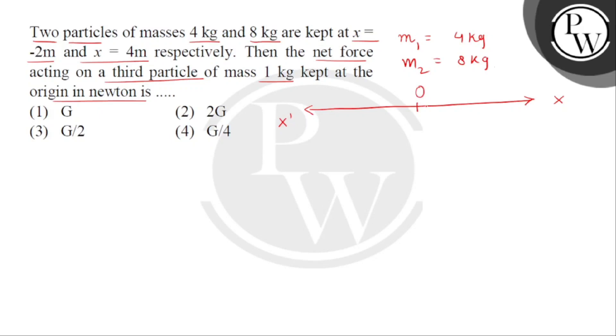First of all, we have M1 of 4 kg placed at x equals minus 2 meter and M2 of 8 kg placed at 4 meter, and at point O, the origin, is a third mass equal to 1 kg.